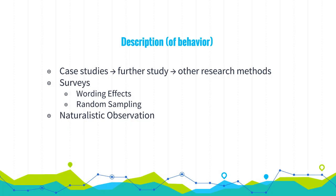Let's talk about description. There are three main ways psychologists describe things: case studies, surveys, and naturalistic observation. A case study examines one individual in depth to find general qualities about the human population. It prompts further study, and after a case study it's necessary to use other research methods, such as surveys.